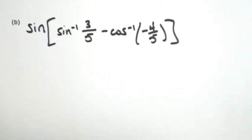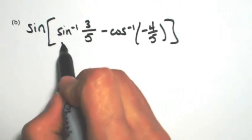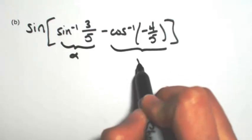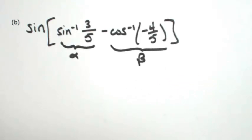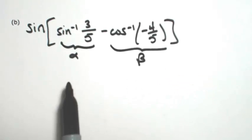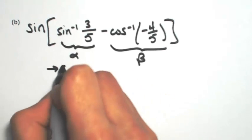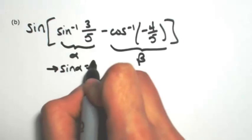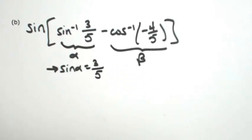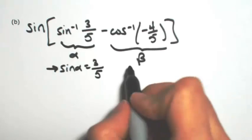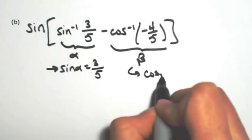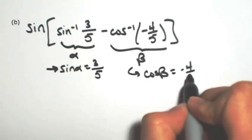So again, inverses are just angles, so I'm going to call the first one alpha and the second one beta. So if alpha is the inverse sine of 3 fifths, then that must mean that the sine of alpha is 3 fifths. If beta is the inverse cosine of negative 4 fifths, then that means that the cosine of beta is negative 4 fifths.